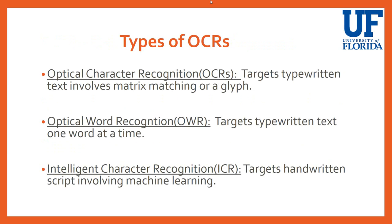Coming to the types of OCRs: the first is optical character recognition, which I have used in this project. It involves any typewritten text and performs character recognition using matrix matching or a glyph. A glyph is a pre-stored image residing in your computer — when you extract characters, you compare them with that image, and if matched, you extract the character and output it to a file or store it in a database.